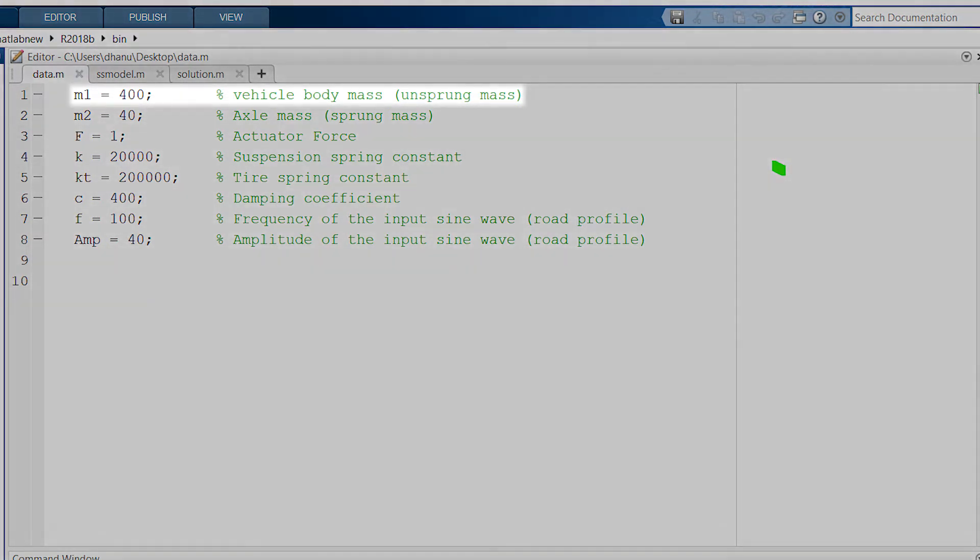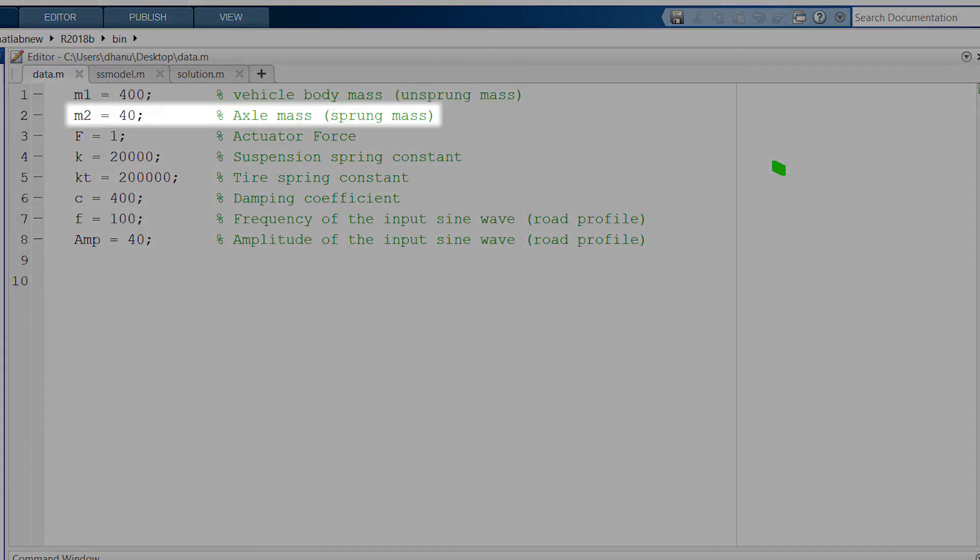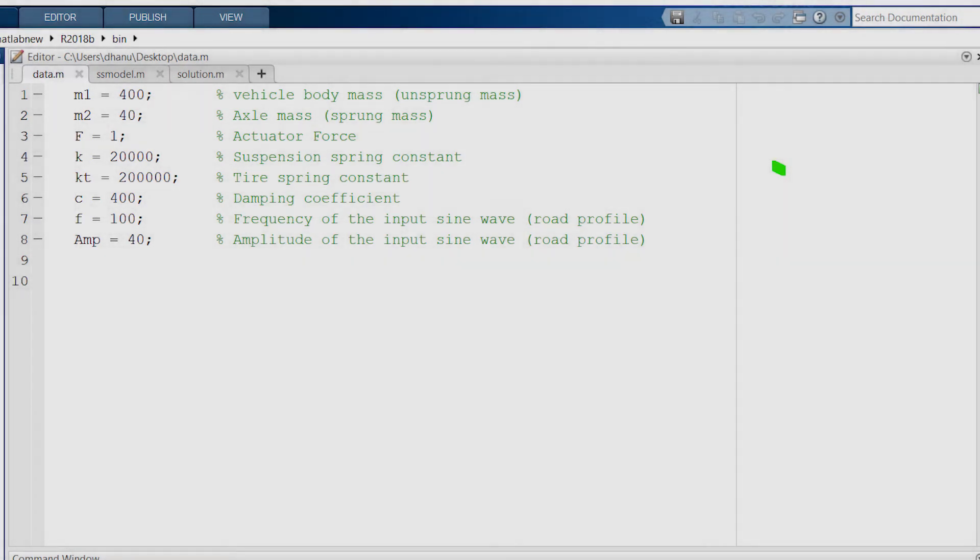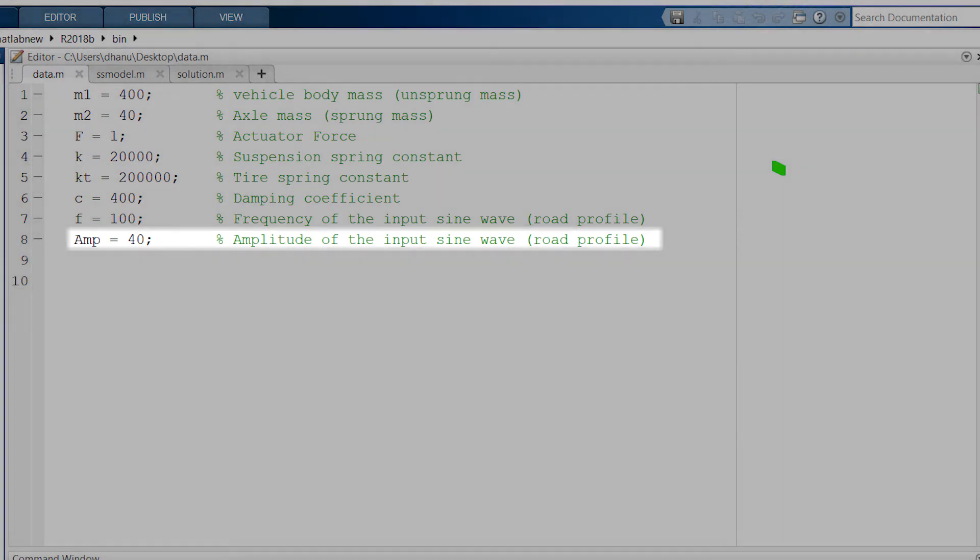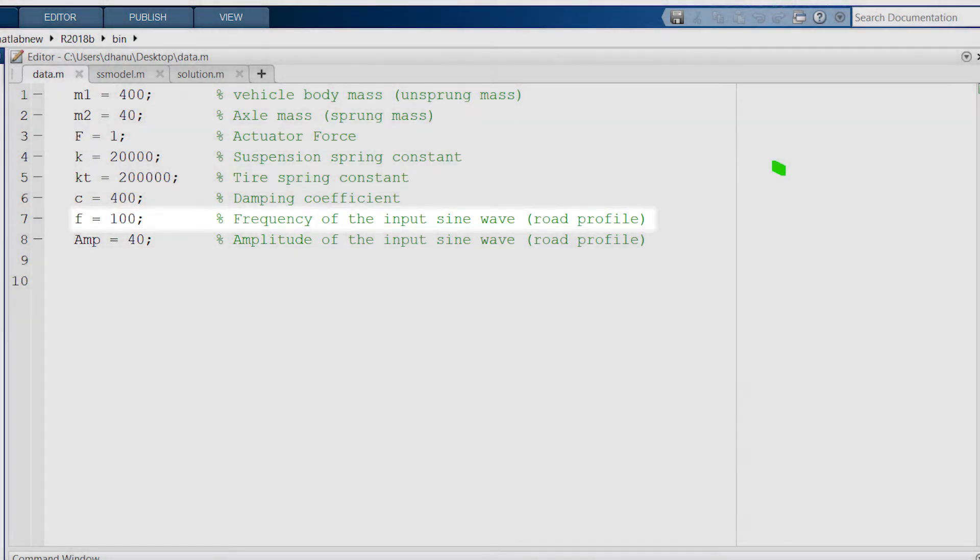This M1 is the vehicle body mass, M2 is the axle mass, F is the actuator force, K is the suspension spring constant and KT is the tire spring constant, C is the damping coefficient of the damper and we are going to use a sine wave as a road profile so that its amplitude is this and this is its frequency.